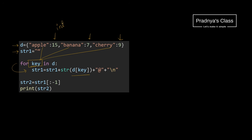That's why using the str function we are converting it to string, and concatenating the '@' symbol as well as backslash n. Backslash n is an escape sequence character which represents a new line character. Outside the loop, we are removing the last character of the string and printing it. Note that this statement is outside of the loop.